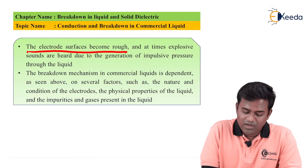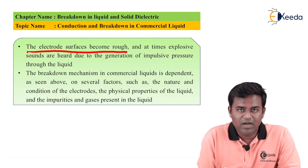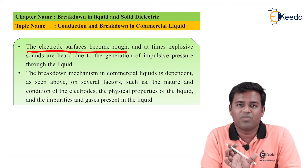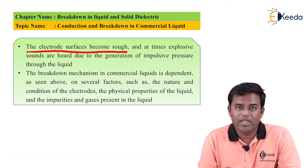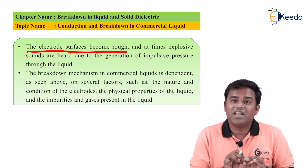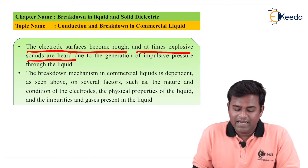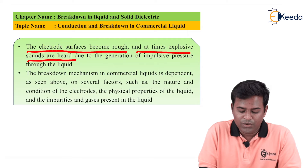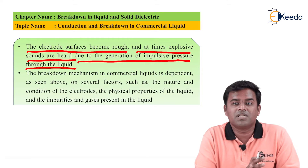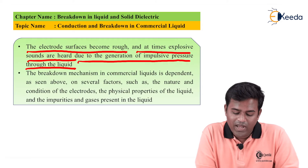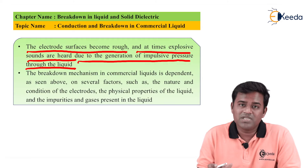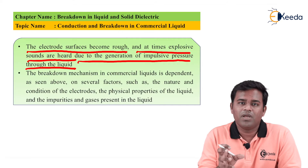The electrode surface becomes rough. As commercial liquid contains impurities, the cathode and anode are immersed in the commercial liquid and their surfaces become rough. At times, explosive sounds are heard due to generation of impulsive pressure through the liquid — similar to corona losses producing a hissing noise in a transmission line — and this impulsive pressure is created due to the impurities.